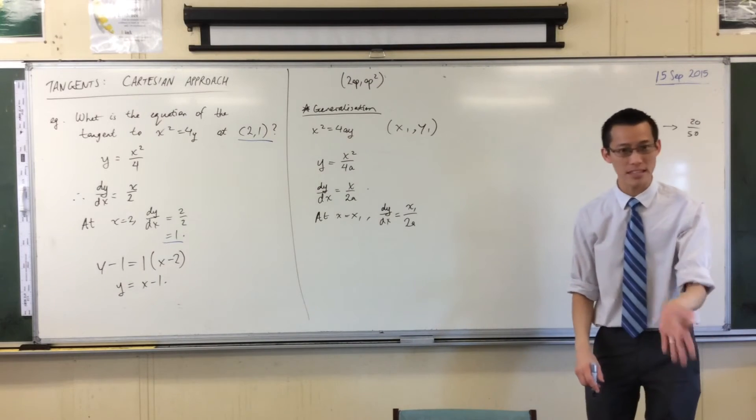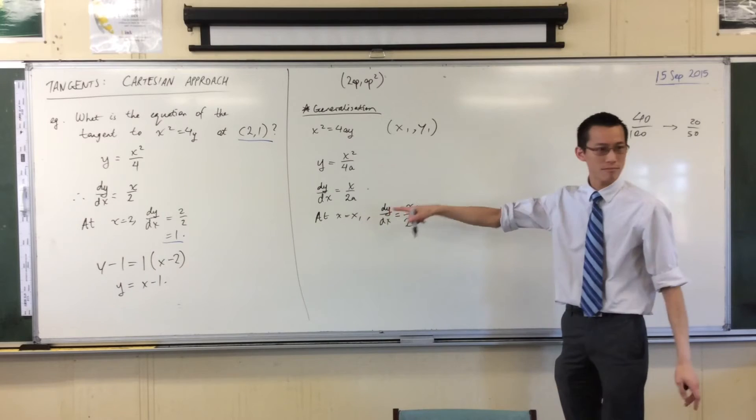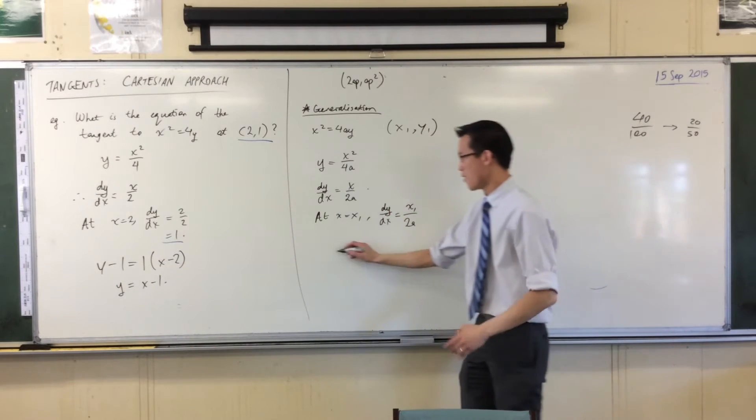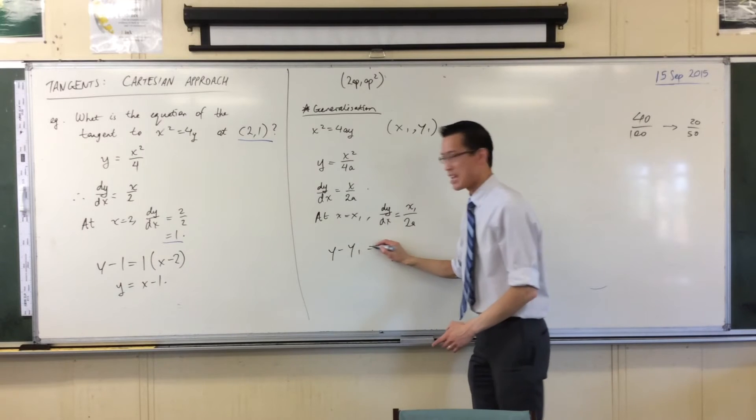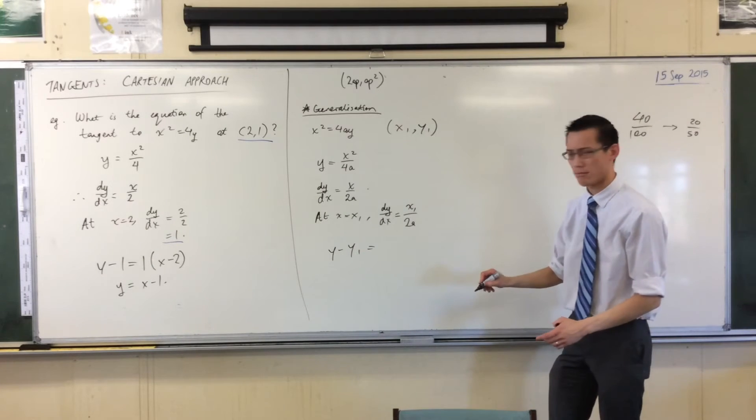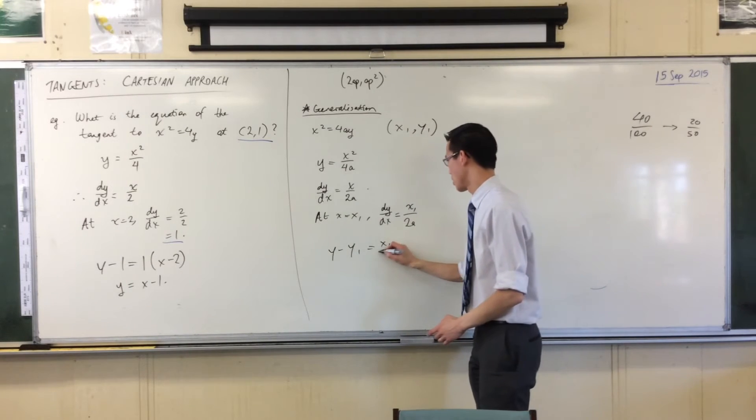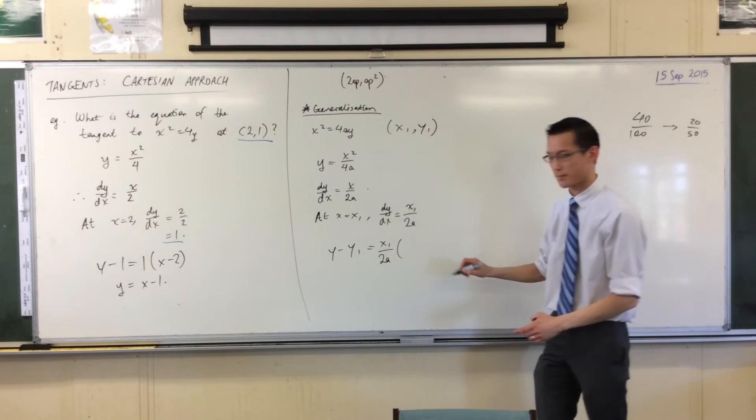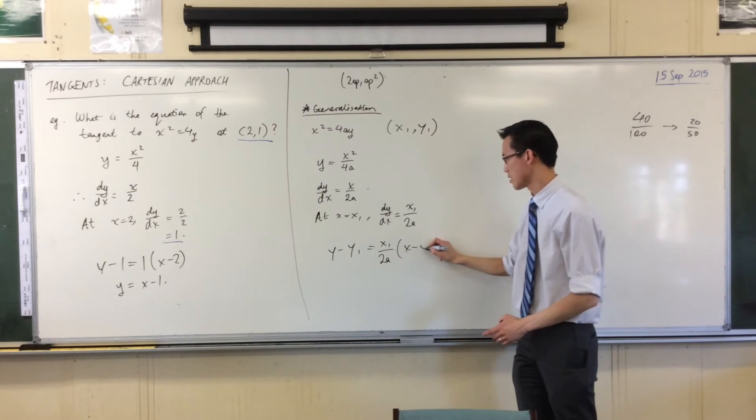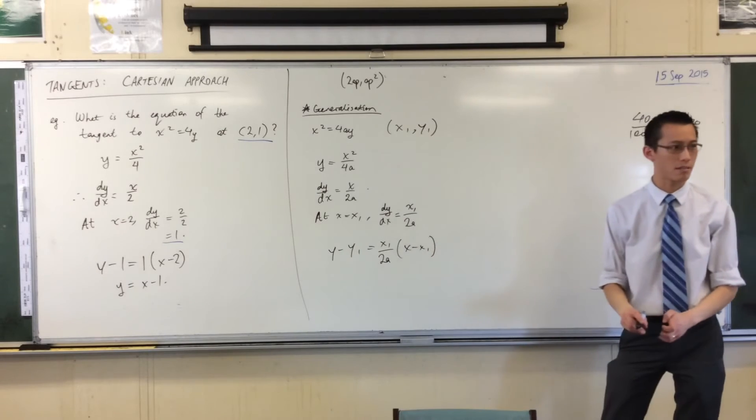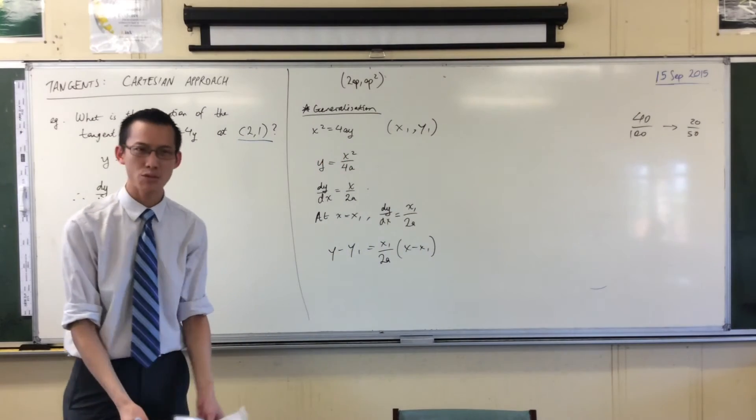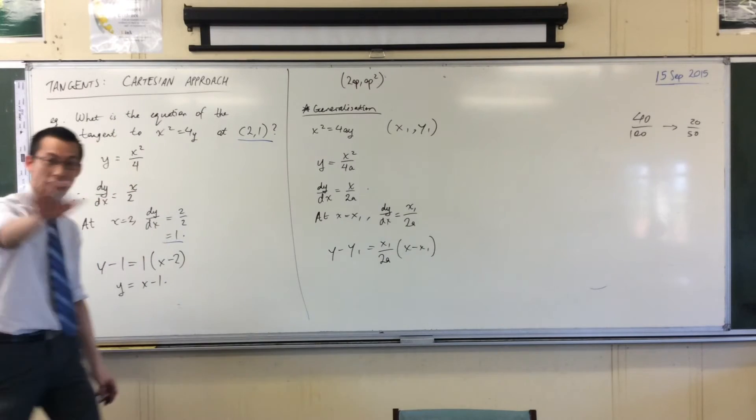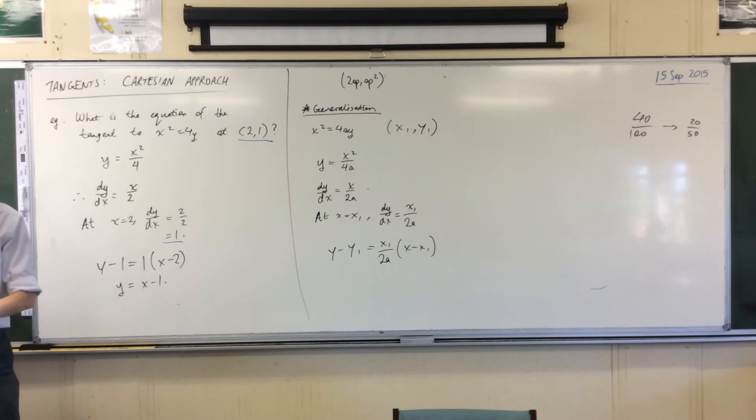So that's good. So now I can pop this into the same kind of form I had before. Y minus Y1 equals, now what's my gradient here? X1/2A times X minus X1. You okay with that? Now, how would you rewrite this? How would you make this a bit simpler? There's a few different ways. Have a go. I'll give you a second to catch up because some of you are still writing.